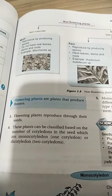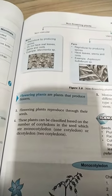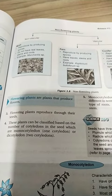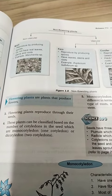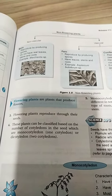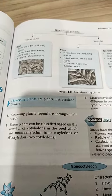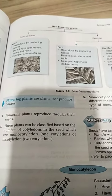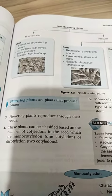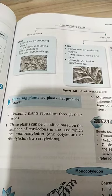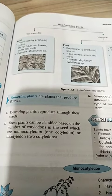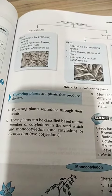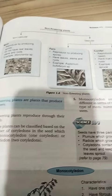Flowering plants are plants that produce flowers. Flowering plants are reproduced through their seeds. These plants can be classified based on the number of cotyledons in the seed, which are monocotyledons — one cotyledon — or dicotyledons — two cotyledons.